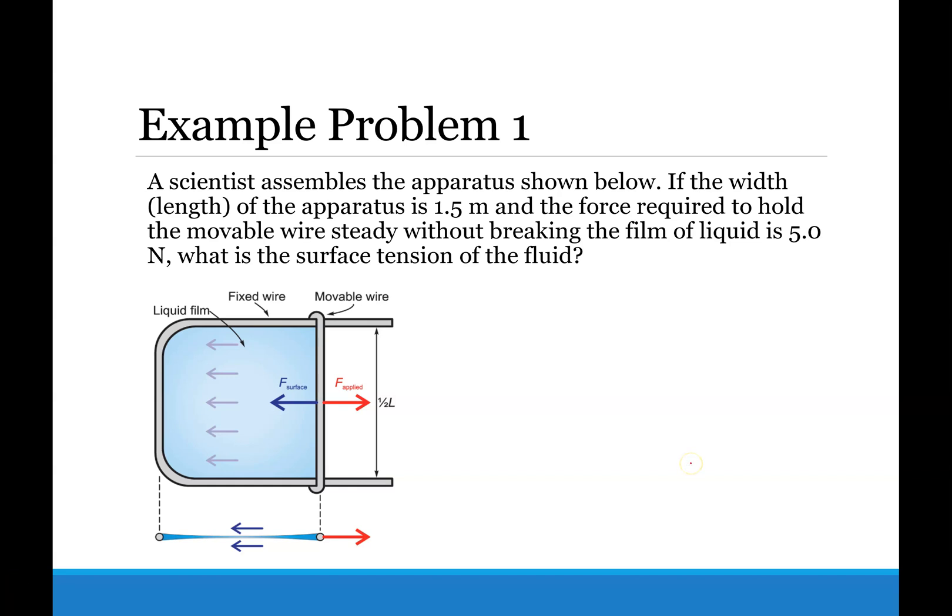Example problem one reads: A scientist assembles the apparatus shown below. If the width or length of the apparatus is 1.5 meters and the force required to hold the movable wire steady without breaking the film of liquid is 5.0 newtons, what is the surface tension of the fluid?